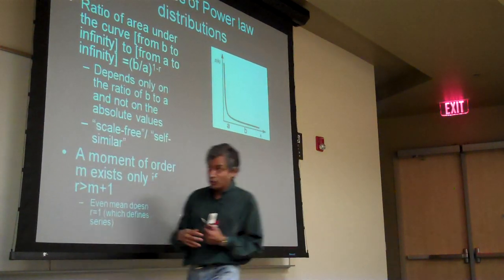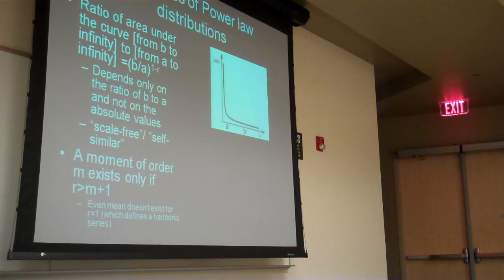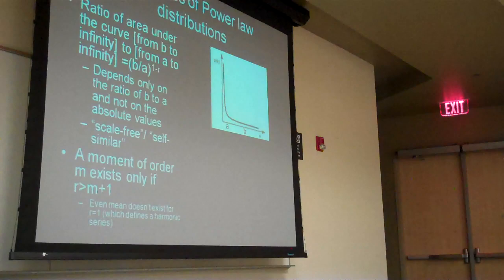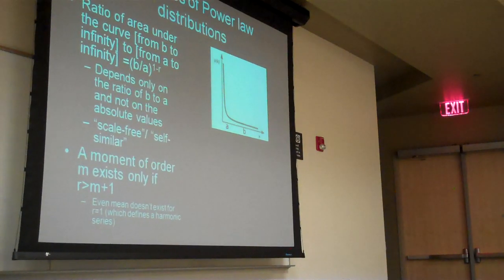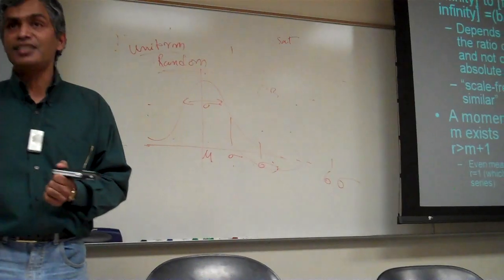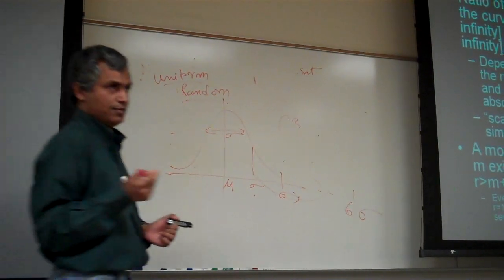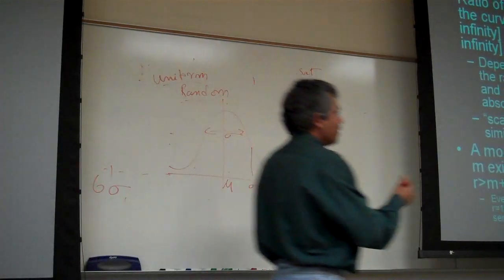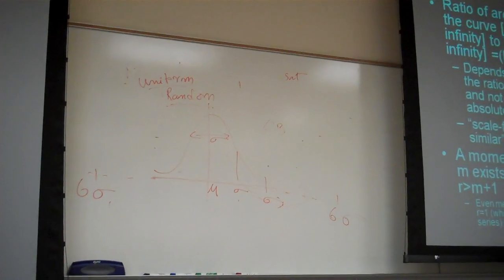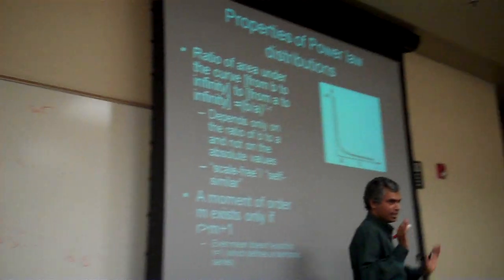For the normal distribution, this thing just keeps going on and on and never becomes 0. And yet we know that under the normal distribution curve, the area is finite. The area is finite because it falls fast enough that it never adds up to infinity. 1/K does not fall fast enough. 1/K² will fall fast enough that it will become finite.